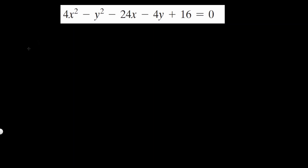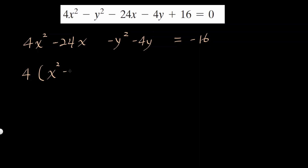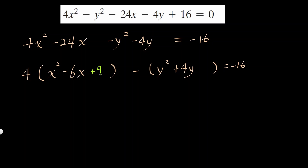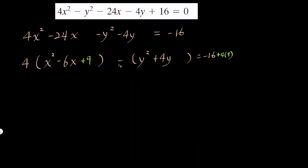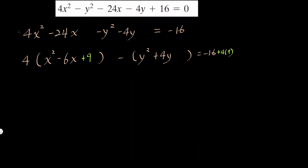Let's do another one. This time we have a general equation — let's convert it into standard form first by completing the square. Group x-terms and y-terms: 4x squared minus 24x, minus y squared minus 4y, with the constant moved to the right side. Factor out 4 from the x-group and negative 1 from the y-group. For the x-group, half of negative 6 is negative 3; squaring gives 9. Adding 9 inside actually adds 4 times 9 to the right side.